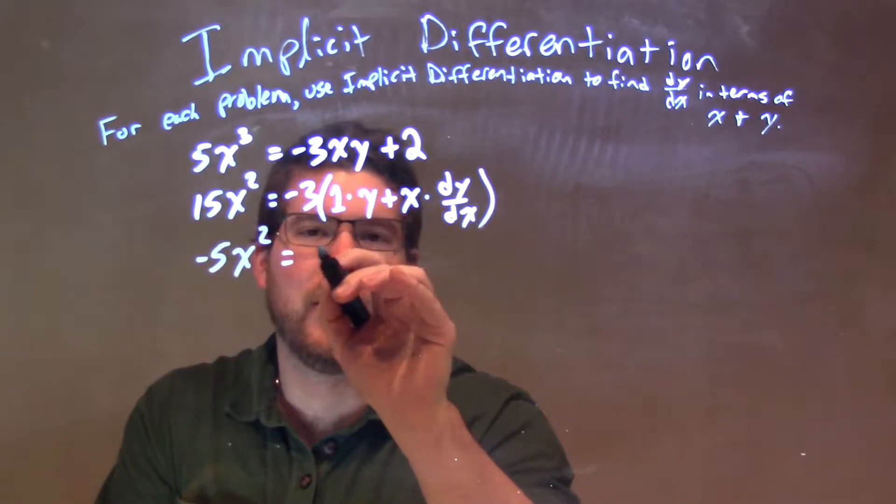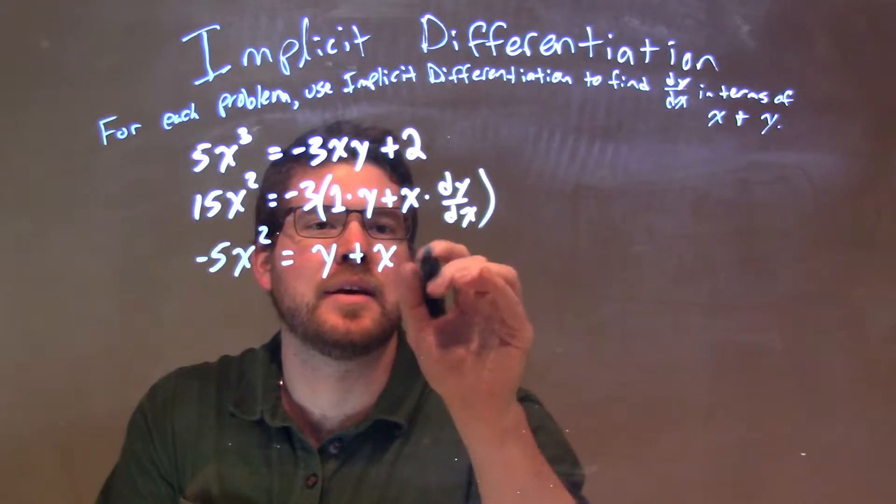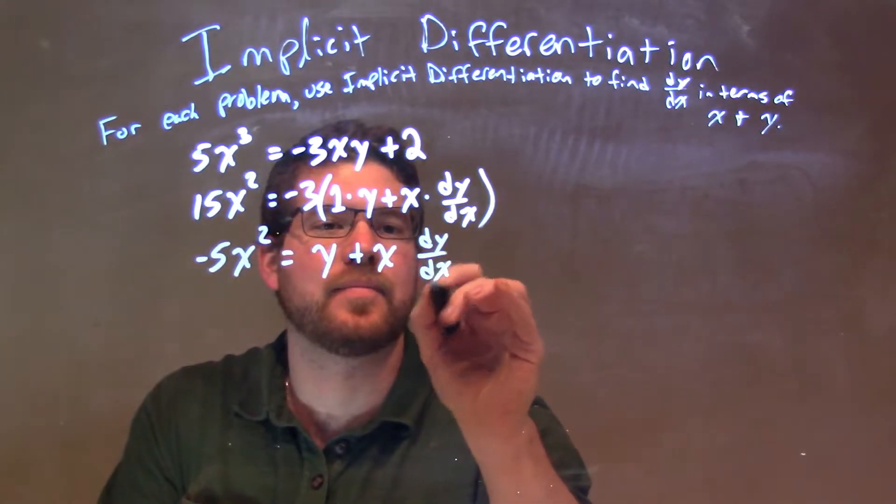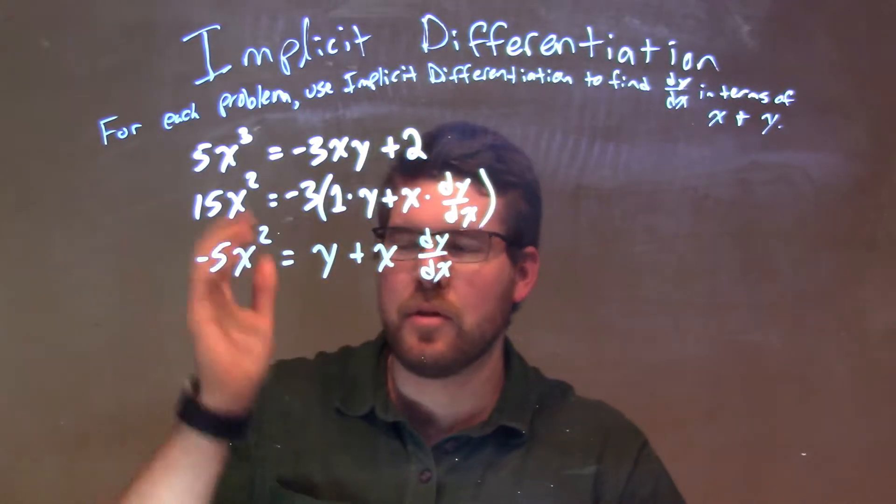Equal to, well, 1 times y is y, y plus x dy/dx. Okay. So, I kind of got rid of the 3, that's fine.